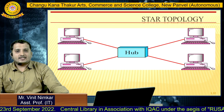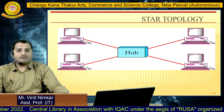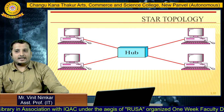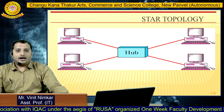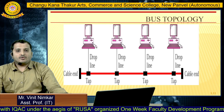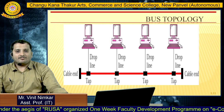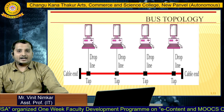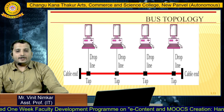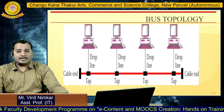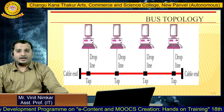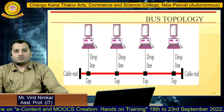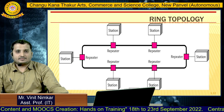Next is star topology. As we can see, in star topology all devices are connected to each other via a central device called a hub. If any device wants to communicate with another device, it has to go through the hub. Next is bus topology. In bus topology there is a single cable to which all other devices are connected via a drop line. Data is transmitted to each individual device, but the main data travels through the single cable and is transmitted to each device via separate drop lines.